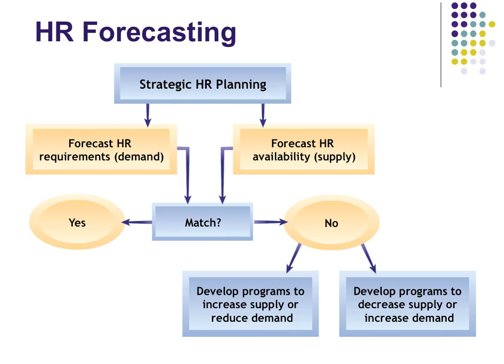This next slide is a flow diagram of how we go from strategic HR planning — how do we deal with whether or how many people we need versus how many we have. We forecast our demand: what we're going to need to meet our strategic objectives. Then we forecast the supply: how many people inside or in the local area have the skills we need. If demand matches supply, we're in good shape and don't need to hire or lay off. If it doesn't match, we have to decide to hire new people or lay off.